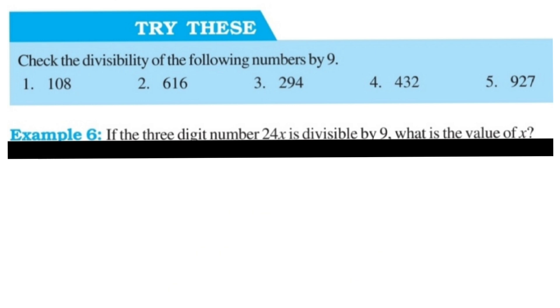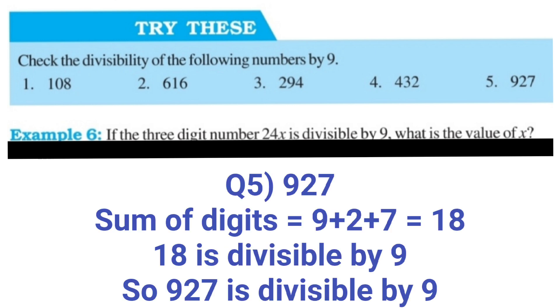After that question number 5, 927. Now find the sum of digits of 927, 9 plus 2 plus 7, it is 18. 18 is also divisible by 9. So the number is divisible by 9. 927 is divisible by 9.